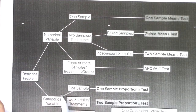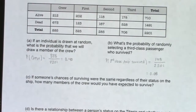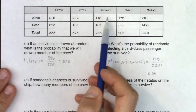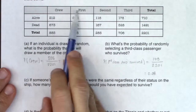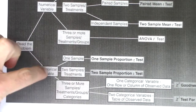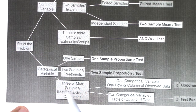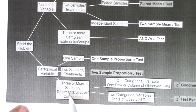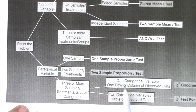We had 2,201 people on that ship, and I need to figure out what was varying among them — was it numerical or categorical? Looking at this two-way table, the numbers are all frequency counts. The variables here are whether they were alive or dead, and their class status — both of which are categorical variables. So I head down to categorical on the flowchart. I had eight groups: four categories for class status (first, second, third, and crew) and two for survival status (alive or dead). That brings us down to the chi-squared tests.